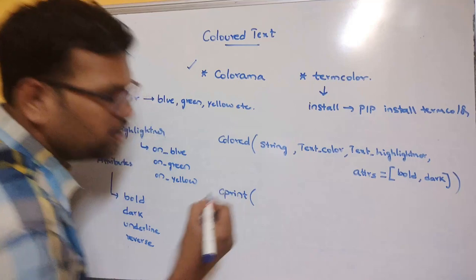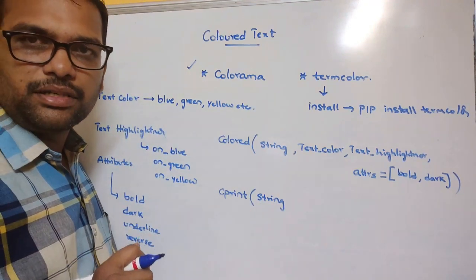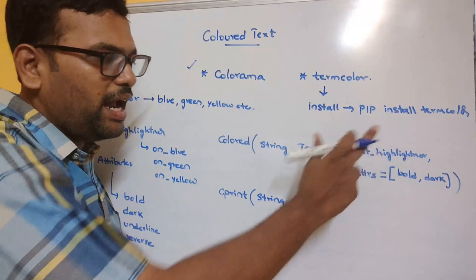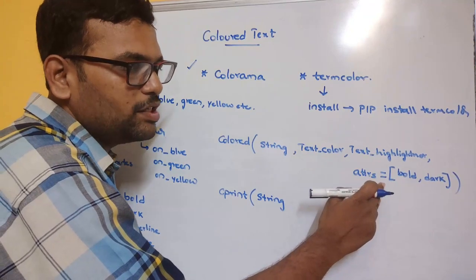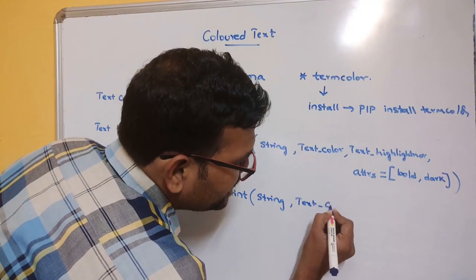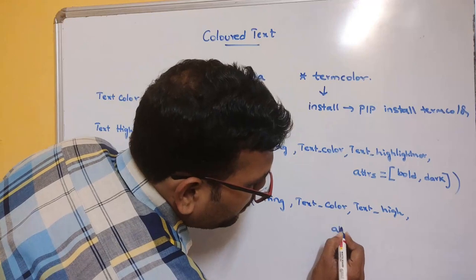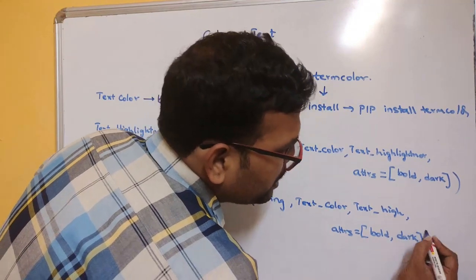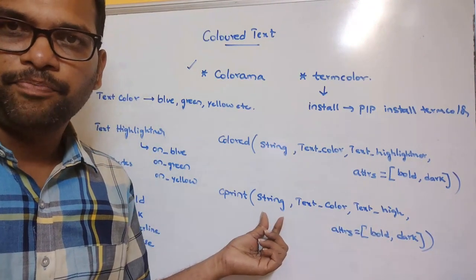The cprint class is similar to colored. Pass the string — everything should be enclosed in curly braces: the string, text color, and highlighter each in curly braces. If required, attributes are given with the attrs keyword: attrs=[attributes] with comma-separated values inside square brackets. So text highlight and text color will be applied to that string.